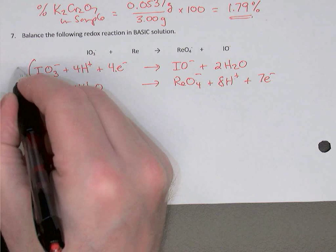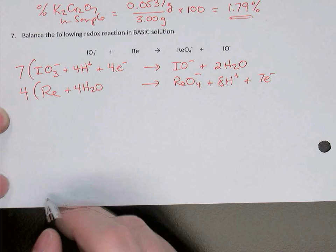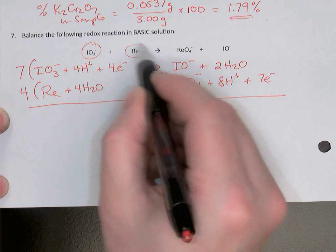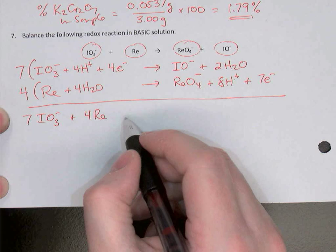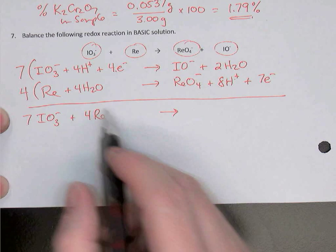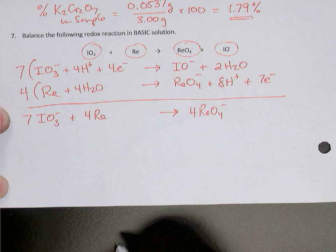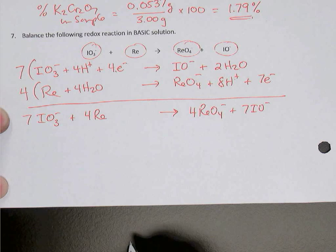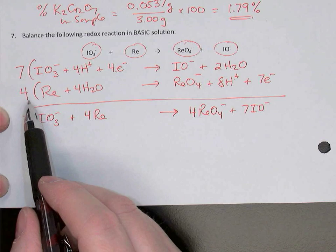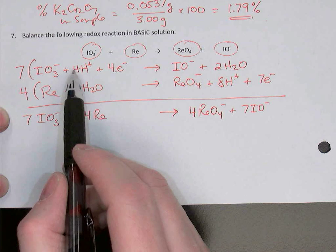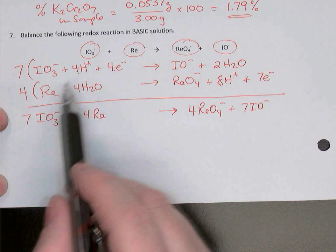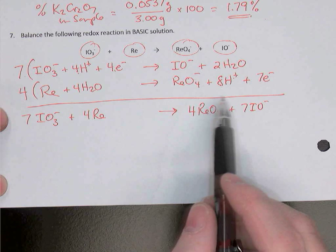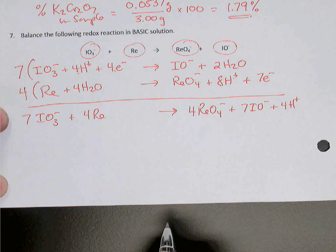Recombine in the order the original reaction was given: seven iodates and four Re. Products: four ReO4 minus and seven IO minus. For hydrogen ions: seven times four gives 28 hydrogens on the left from the first equation; four times eight gives 32 on the right from the second equation. So 28 on the left and 32 on the right — the difference is four, and since the larger number is on the right, we subtract 28 from both sides, leaving four hydrogen ions on the right.